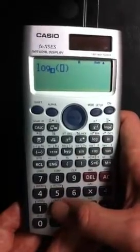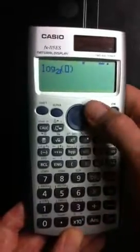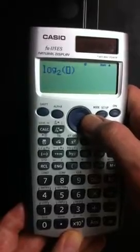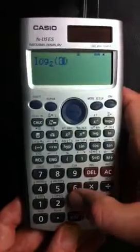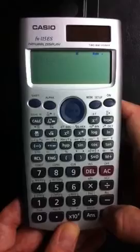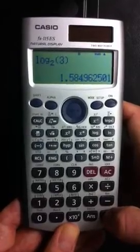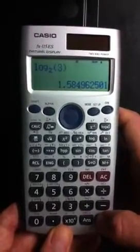So if you hit that, you can literally do a log base 2 by typing a 2 in for your base, hit your right arrow, then for your argument you can do whatever you want. So you can do things like log base 2 of 3 equals, and it gives you a decimal approximation. So that's really nice as well.